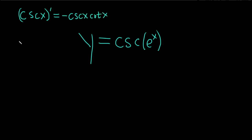Also, if you take the derivative of e^x, you just get e^x. So here we have the cosecant of e^x, so we're going to have to use something called the chain rule.